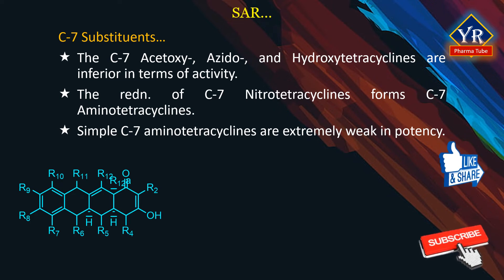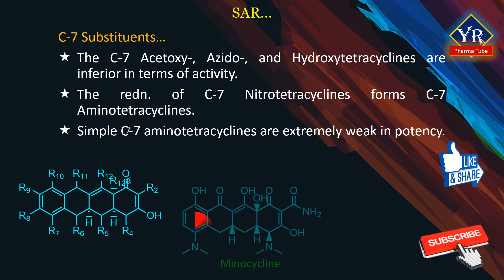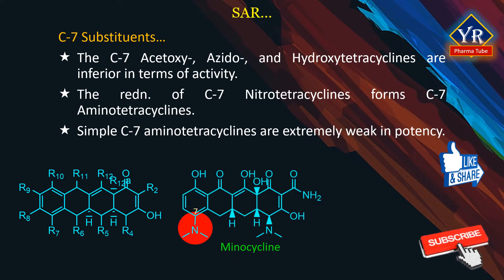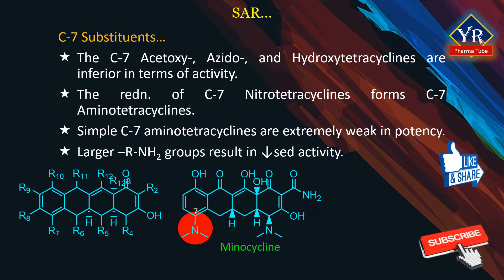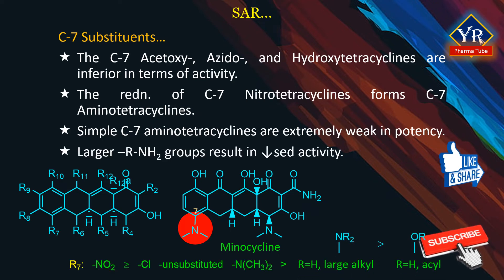This important breakthrough culminated in the development of minocycline, which is the last tetracycline to be marketed. Minocycline remains a dominant tetracycline in part due to its superior potency as well as its activity against tetracycline-resistant organisms. Larger alkylamino groups at the C7 position result in decreased antibacterial activity, reminiscent of the C4 dialkylamino moiety.